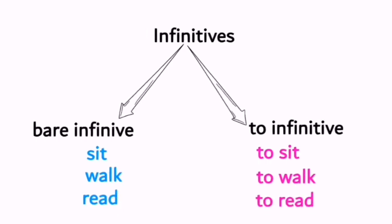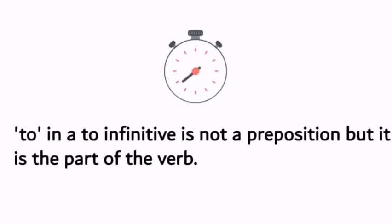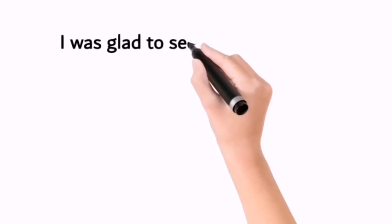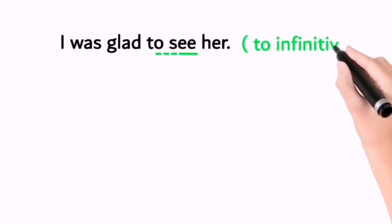Here is one important point to keep in mind: 'to' in a to infinitive is not a preposition, but it is part of that verb. Now look at these examples. I was glad to see her. Here, 'to see' is a to infinitive.